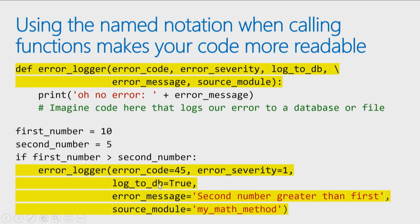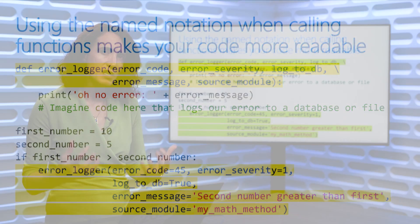pass in an error code of 45, an error severity of 1, log to database set that to true. The error message is second number greater than first, and the source module was my math method. Oh, suddenly I can almost guess what the values I should pass in whenever I call error logger because of this named notation.